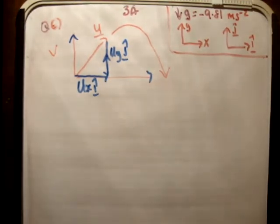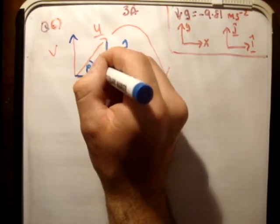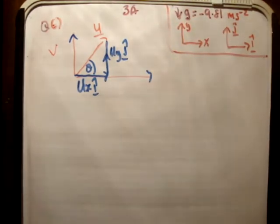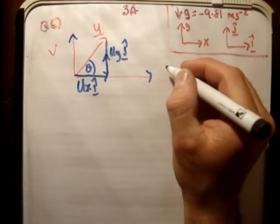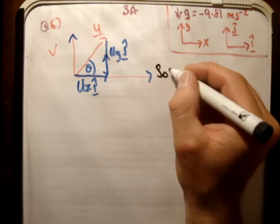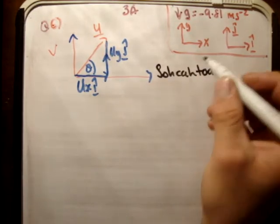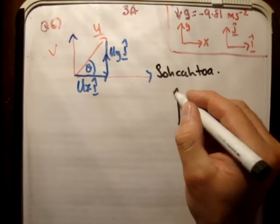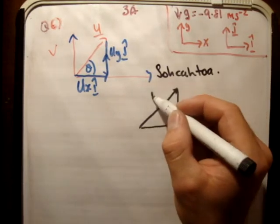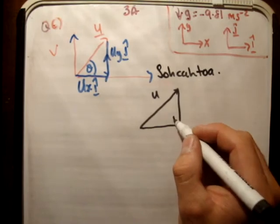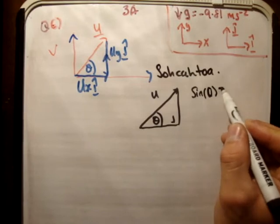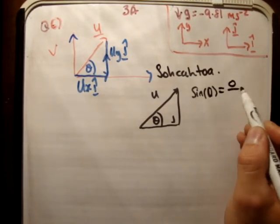I'm just going to get rid of this for a moment. Now we're told that it's projected at an angle theta. The next thing is that we know how to resolve vectors with angles. We can use just a quick reminder. We have SOHCAHTOA, where sine is opposite over hypotenuse, cosine is adjacent over hypotenuse, and tangent is opposite over adjacent.